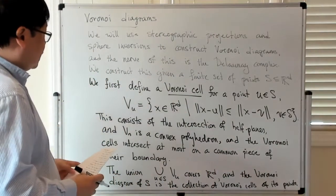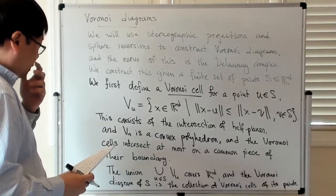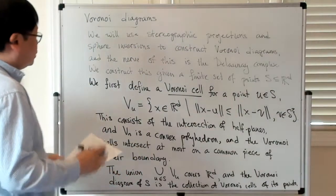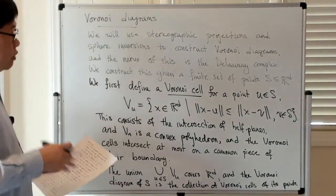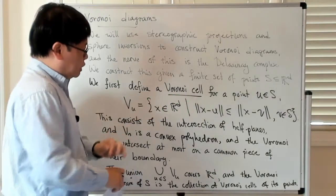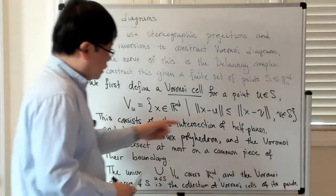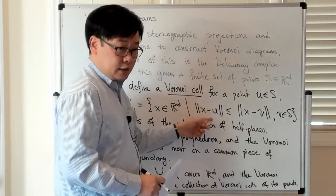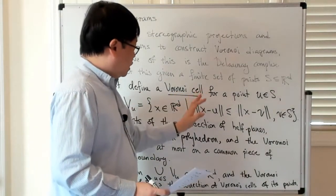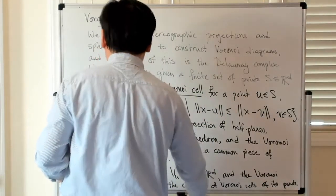That's the basic setup for Voronoi cells and Voronoi diagrams. It turns out there is also a characterization in terms of stereographic projections and sphere inversions. In order to do that, it is helpful to generalize the idea of Voronoi cells a little bit by introducing weights to each of the points and tweaking the notion of Voronoi cells slightly to accommodate these weights.